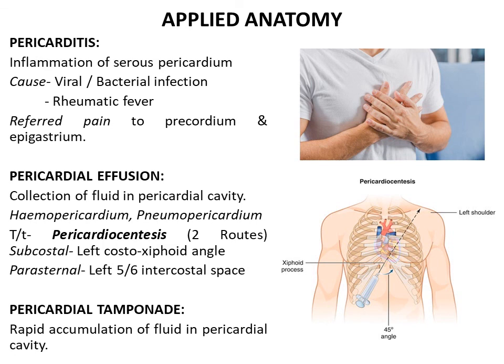Pericardial tamponade is rapid accumulation of fluid in the pericardial cavity. As the fibrous pericardium prevents outward expansion of the fluid, this interferes with atrial filling during diastole, leading to decreased cardiac output. It is a medical emergency and needs to be immediately treated by pericardiocentesis.